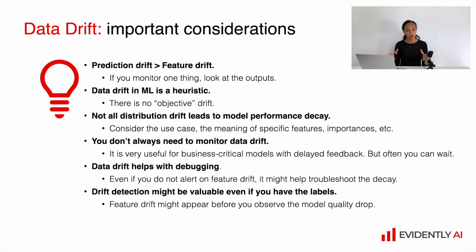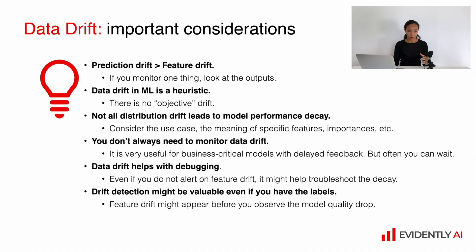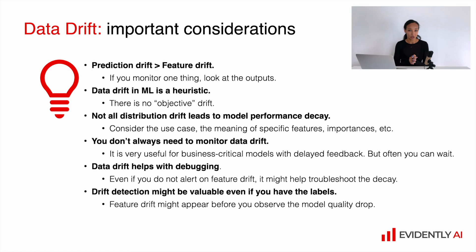There are some important considerations related to data drift. First, in most cases prediction drift is more important than feature drift — if you need to start from something, definitely start from prediction drift. Also, the whole idea of data drift in machine learning is just a heuristic. There is no objective drift, no best data drift metric, no right data drift metric — it's always case- and data-specific.